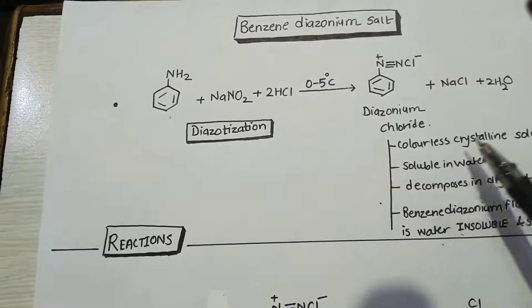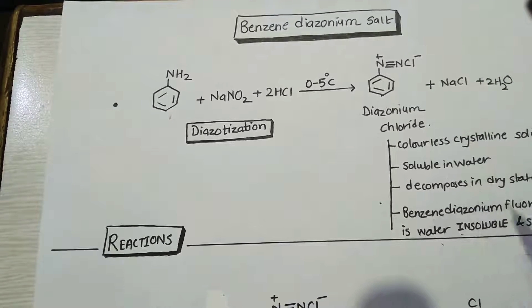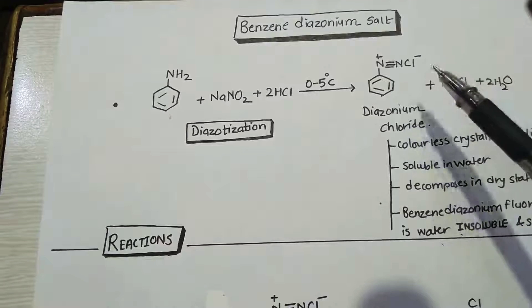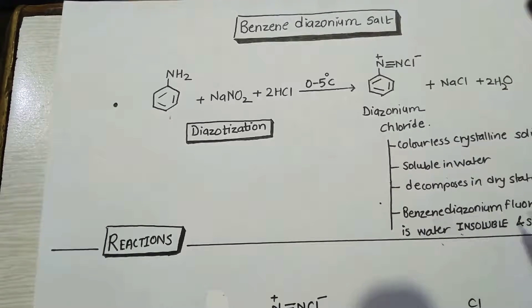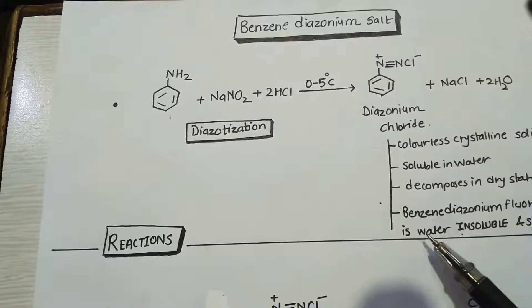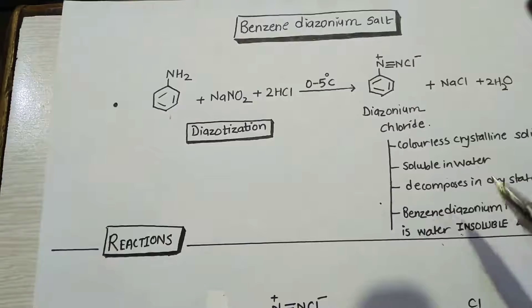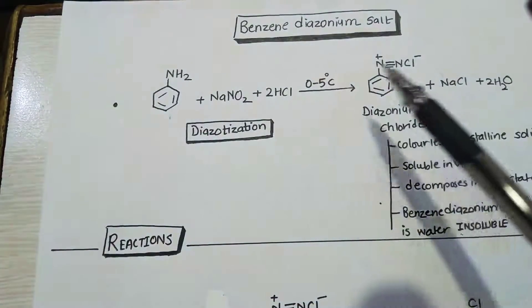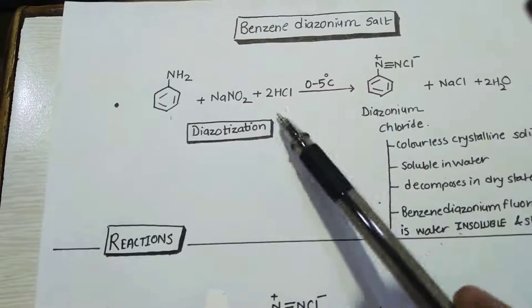But aromatic amines will be stable for a short time. These diazonium salts are colorless and crystalline solids. They are soluble in water, they decompose in the dry state. And also remember that benzene diazonium fluoroborate is stable also at room temperature and it is water insoluble.